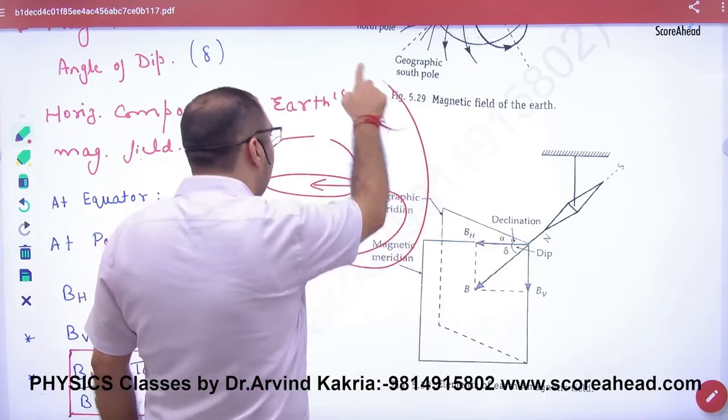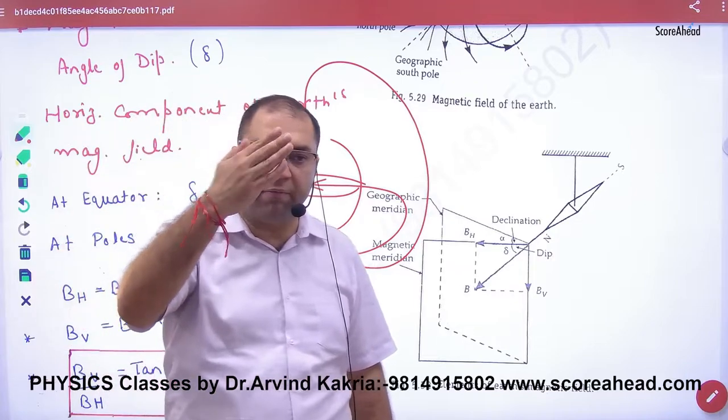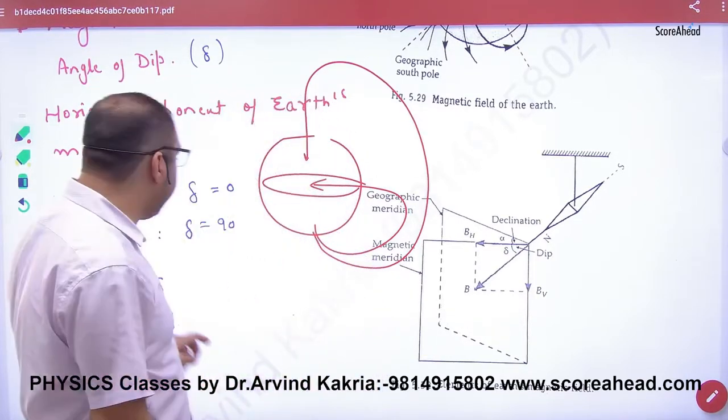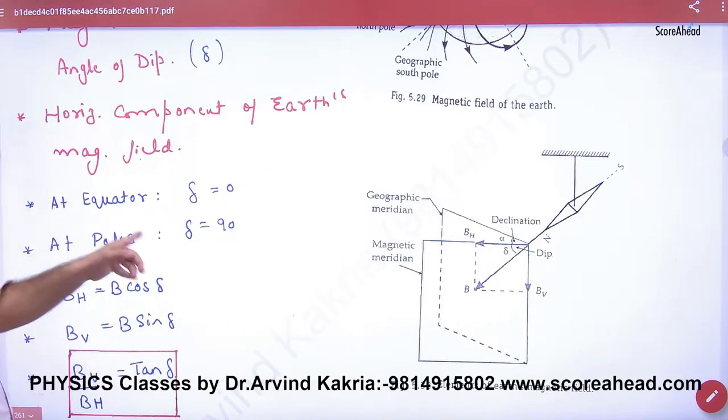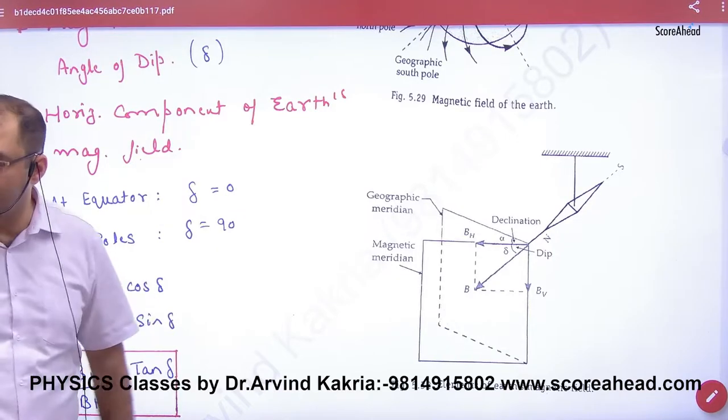And at the poles, the line is straight, it is 90 degrees. So the angle of dip is 90. Two terms never forget: at equator, angle of dip is zero, and at poles, angle of dip is 90.